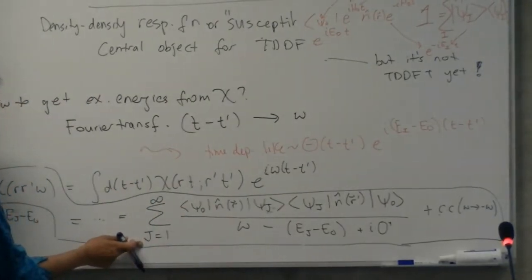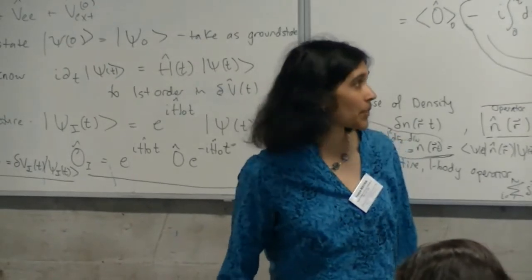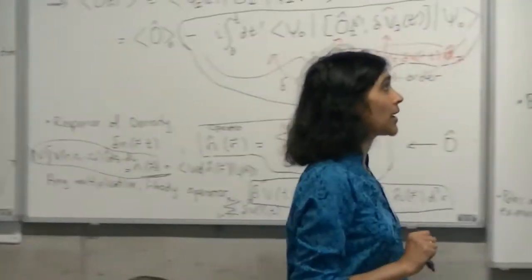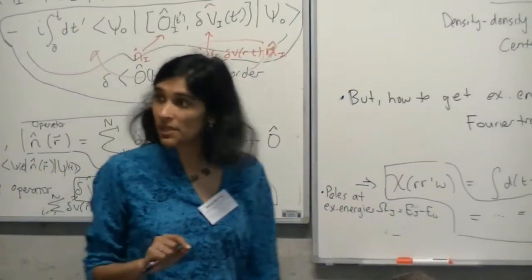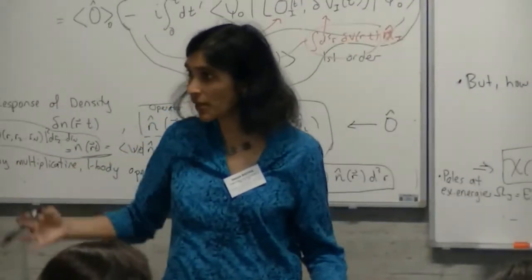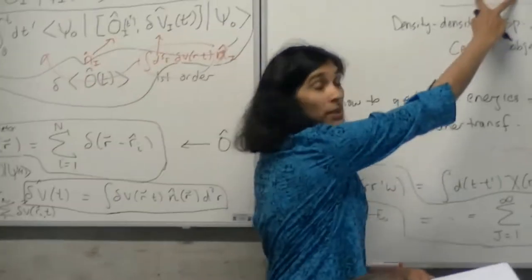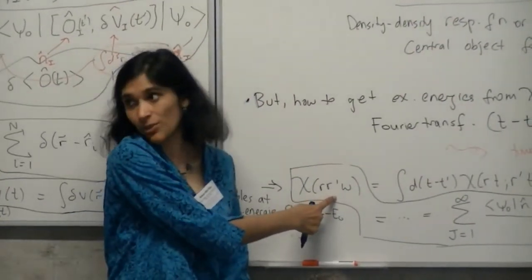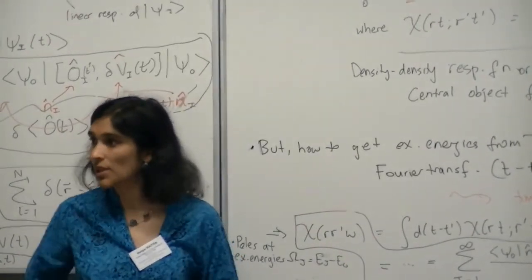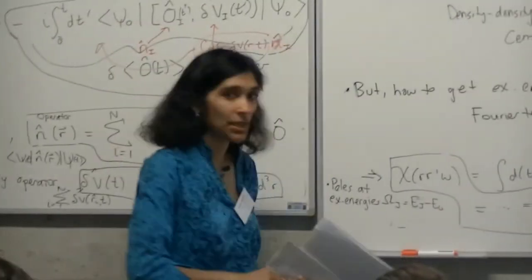A clarification: the E_J here are the energies of the interacting excited states psi_J, where H₀ psi_J equals E_J psi_J. E₀ is the ground state energy, so E_J minus E₀ are precisely the excitation energies. The sum is over all states including the ground state for completeness, but when E_J equals E₀ the two terms in the commutator cancel. This is also often called the spectral representation or Lehmann representation of chi. There are poles at the excitation energies, slightly below the real axis, and a branch cut for the continuum.